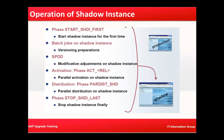Now the operations of the shadow instance: at the top you have the production system, at the bottom you have the shadow instance. The phase START_ISHDI_START first starts the shadow instance for the first time. Then batch jobs run on shadow instance for versioning preparations. SPDD runs for modification adjustment on shadow instance. Then the activation phase ACT_UPGRADE or ACT_RELEASE runs for parallel activation, followed by PDIST_SHD for parallel distribution, and finally STOP_SHDI_LAST stops the shadow instance.